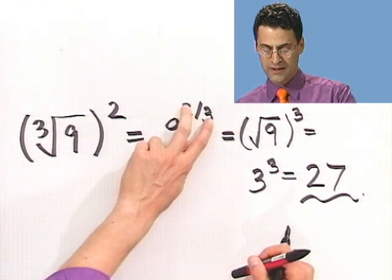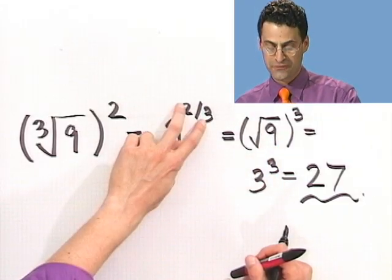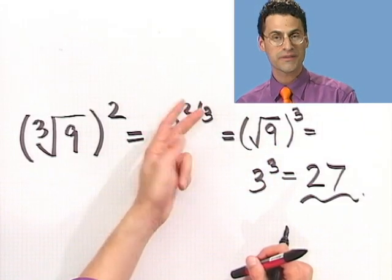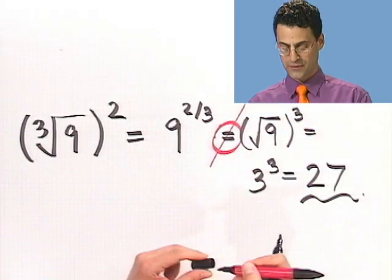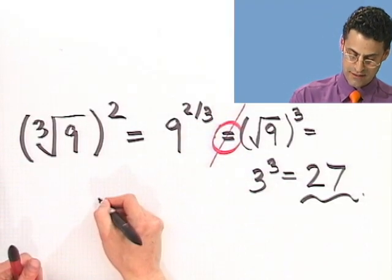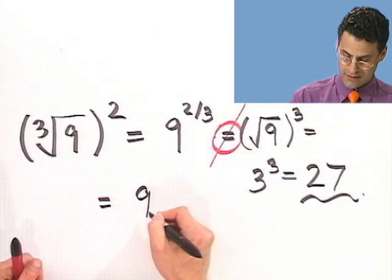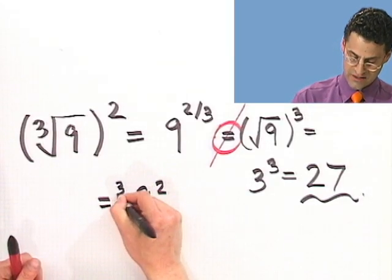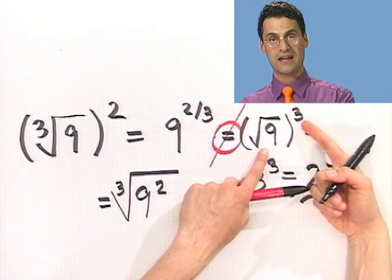But this business is completely wrong. Here, I wrote this as 9 to the 3 halves power. I flipped these two things. But that's not allowed. Even though it's a great common mistake, that is not allowed, OK? All I could do here is do just what it says. I could flip this this way. I could write this as 9 squared and then take the cube root. See, I can switch the roles of these things, but I can't just reverse those roles like that.